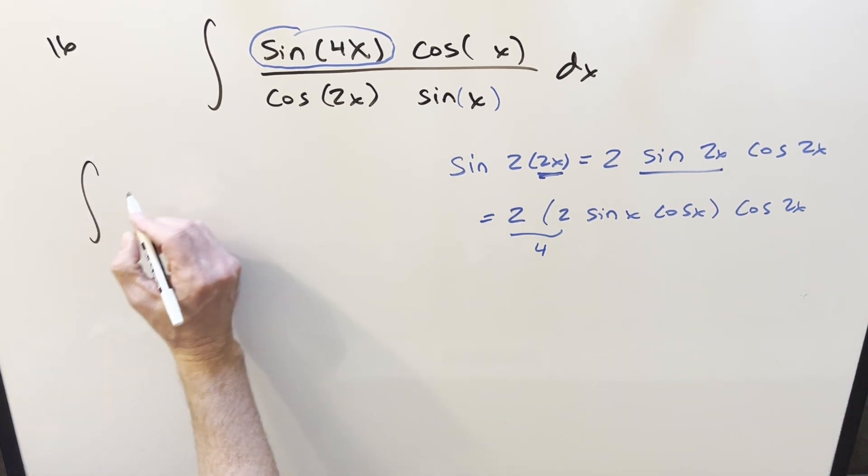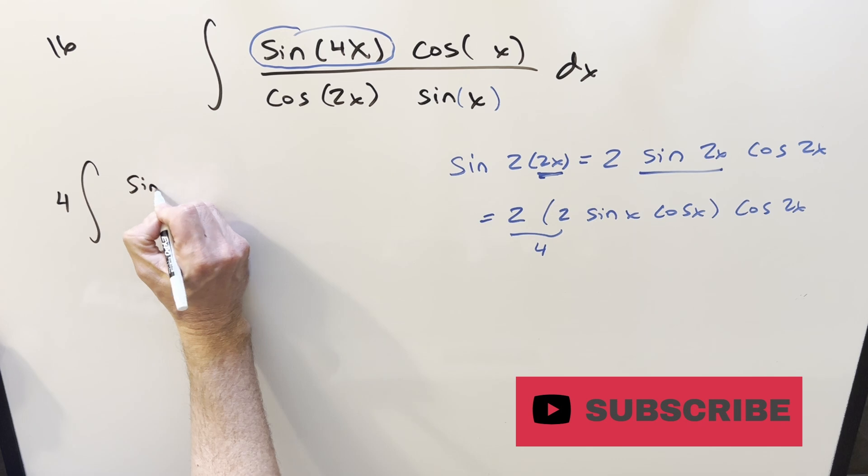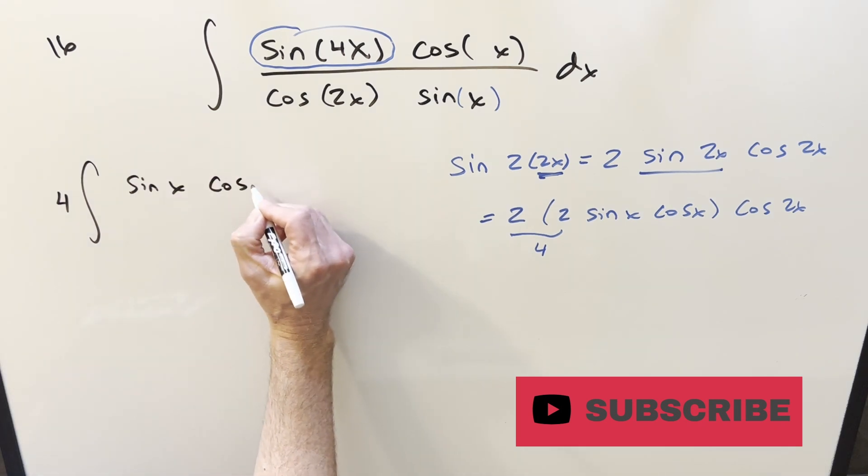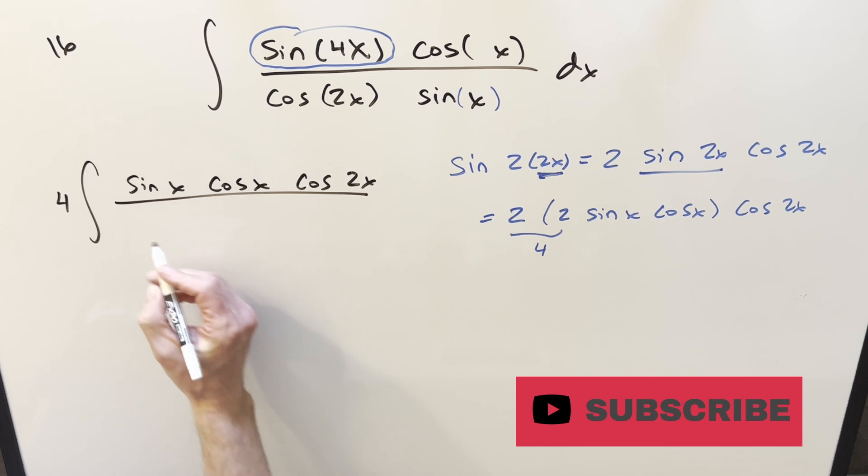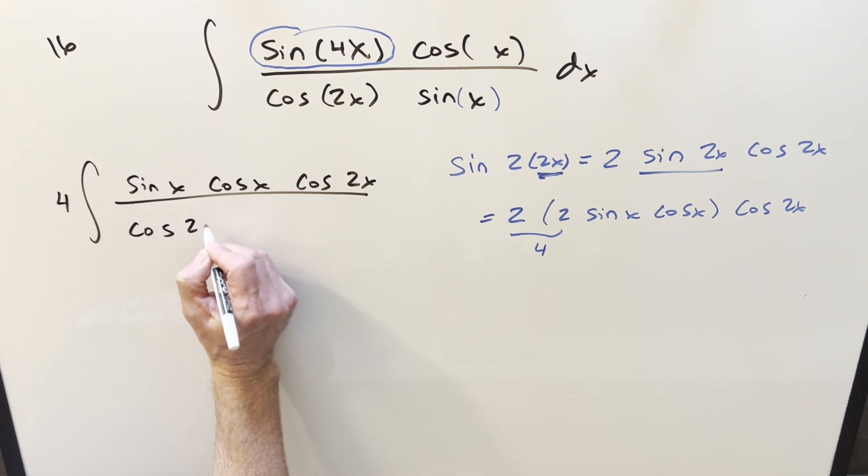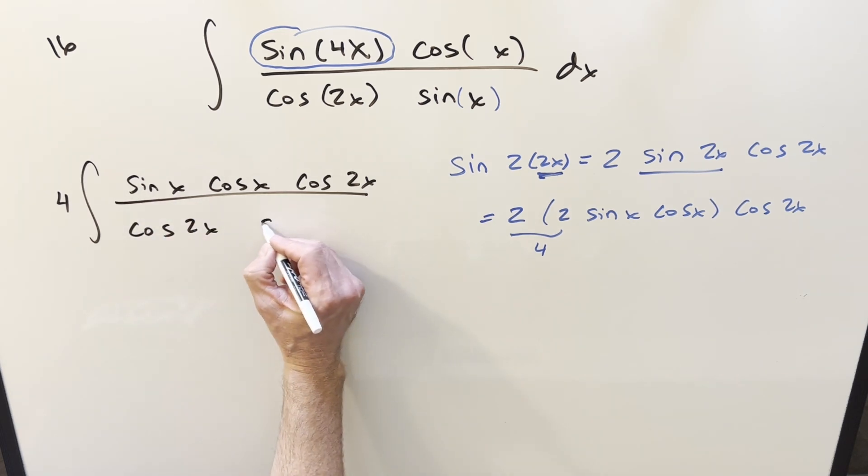So rewrite. We got the 4 in front. Let's take the 4 out front of the integral here. Then all the rest of it in the numerator. So we have sine x, cos x, cos 2x. And now we get the cancellation I wanted to do in the beginning because we're going to have cosine 2x cos 2x.